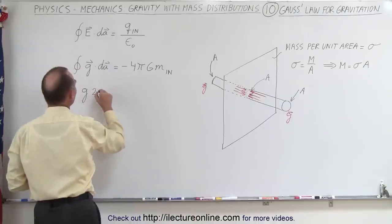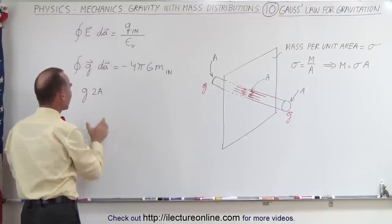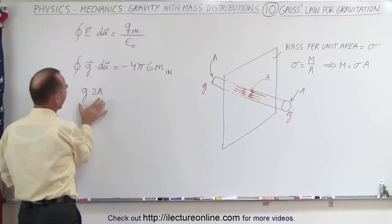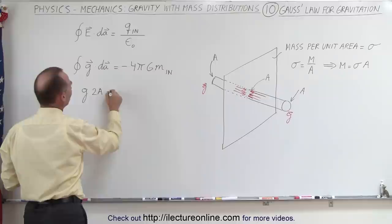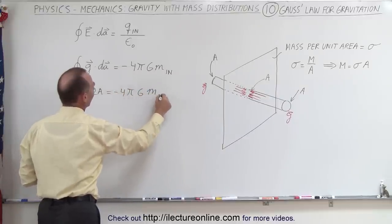So that would be times 2A, and of course the result of a dot product is going to be a scalar quantity. So this will be a scalar quantity, and that is equal to minus 4πGm inside.